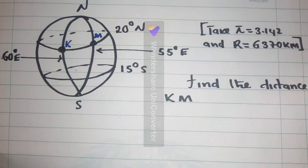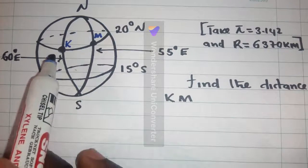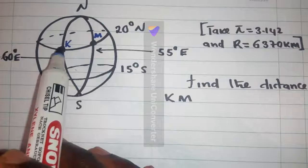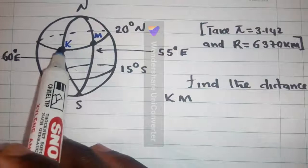Alright, so in our previous video, we found the distance along the greatest circle. And for today, it will be the distance along the latitude. So, this is the latitude, and they have said we find the distance between K and M, somewhere here from K to M.